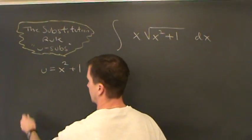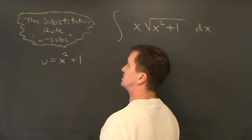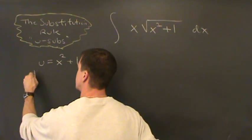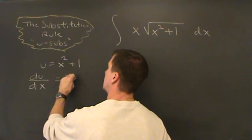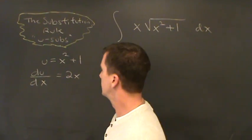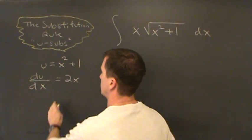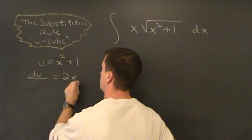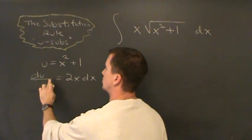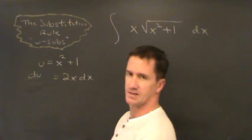That's the first step. Step two, we're going to differentiate both sides with respect to x. du/dx equals 2x. Now I'm going to multiply dx on both sides, so rewrite this as du equals 2x dx.